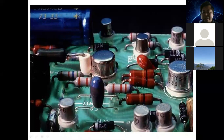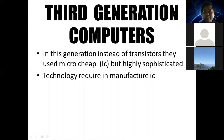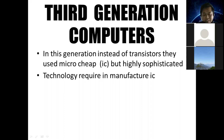The disadvantage of second generation computers: frequent maintenance was required and the cost was very high — very expensive. So we move to third generation computers. Third generation computers started from 1965 to 1970. Instead of transistors, they used a microchip.